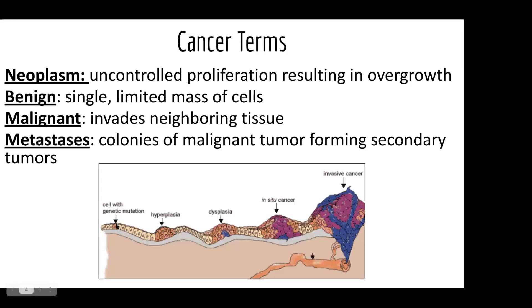This diagram shows how you can start with one cell on the left that has a mutation or collection of mutations, and it starts to grow while still contained. Once it grows to a certain point it becomes dysplastic — meaning it becomes irregular in shape or form, creating a disruption to the structure of the tissue it's in — and then we might say it has malignant potential.